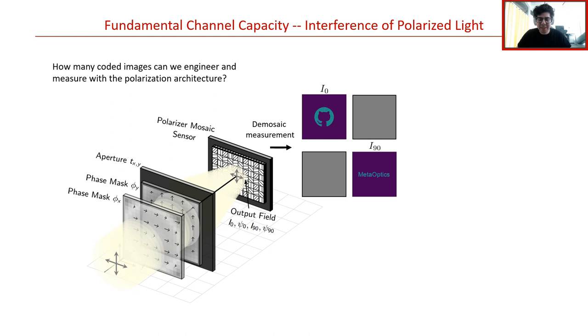Before we continue further, we should take a moment and answer one of the initial questions that we raised about the polarization multi-image paradigm. Given the design of the camera and the use of a polarization-sensitive metasurface, what is the channel capacity of this imaging system? In other words, how many coded images can we directly engineer and measure? Let's recall that in the spectral case discussed previously, the answer was unambiguous. With the red, green, and blue spectral filters, we could clearly capture three distinctly coded images since different wavelengths of light do not interfere with each other.